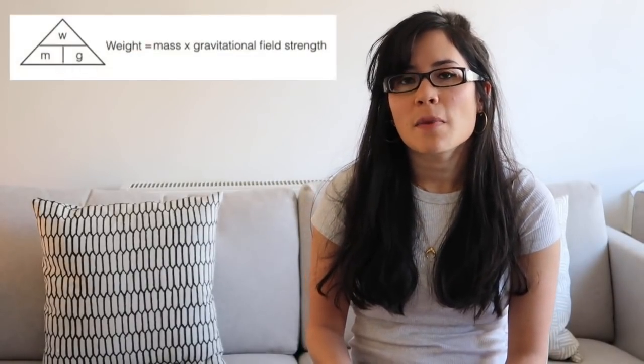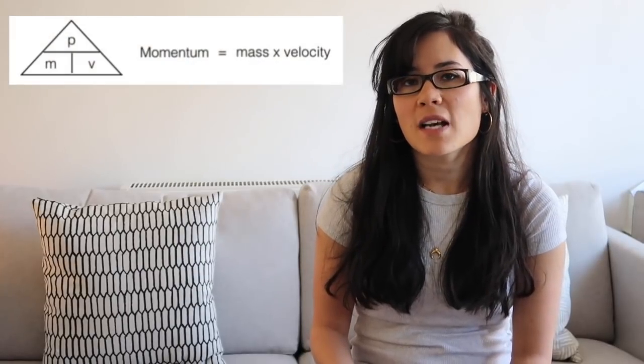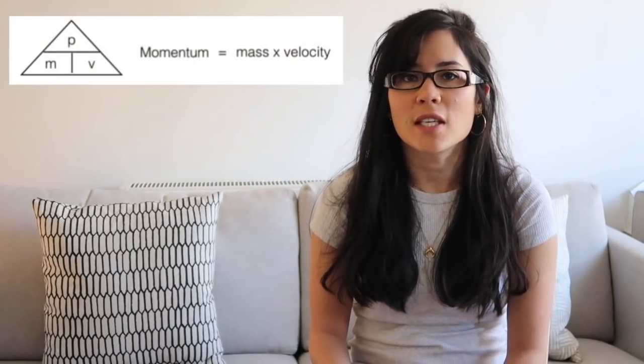How do you calculate weight? Weight equals mass times gravitational field strength, which on Earth is just the number 10, or 9.8 if you're feeling more accurate. How do you calculate momentum? Momentum equals mass times velocity.